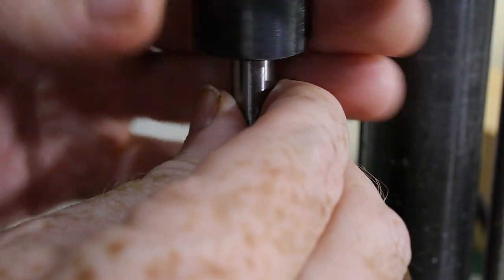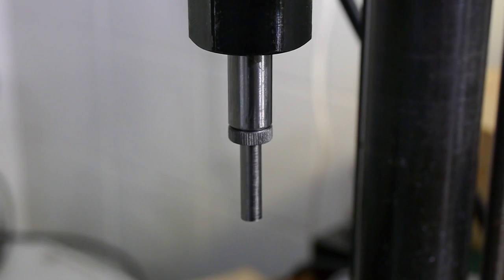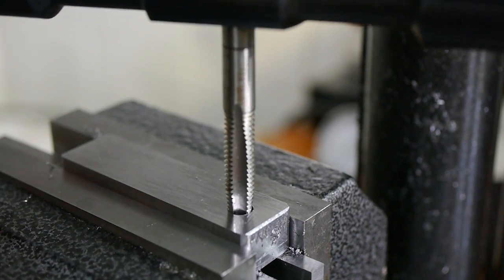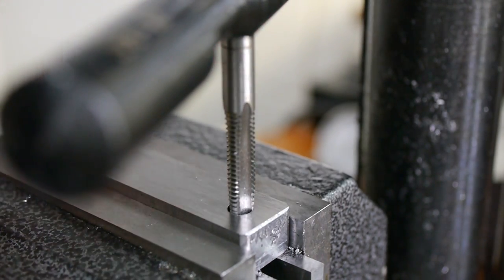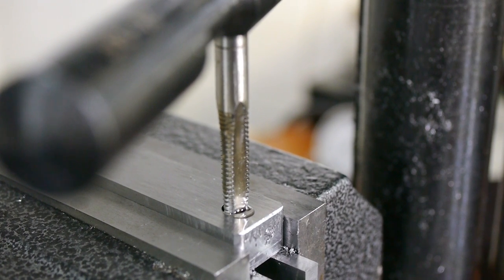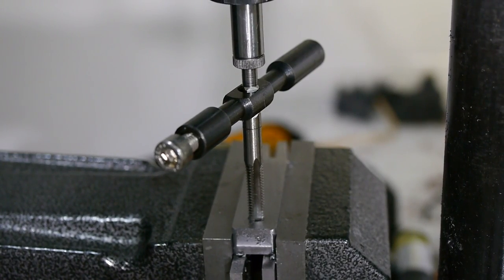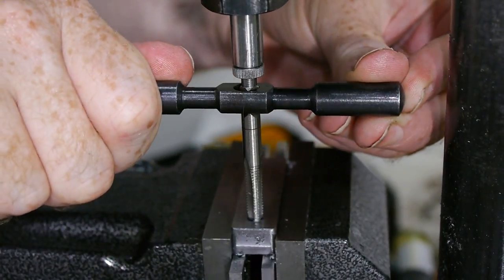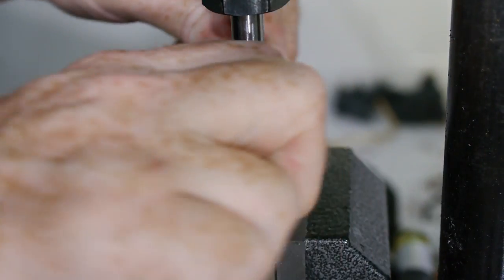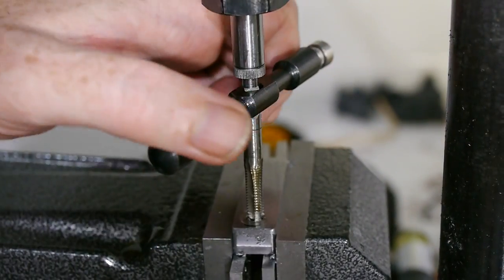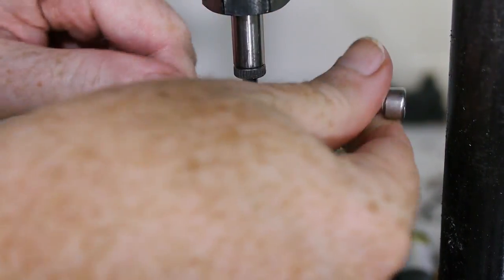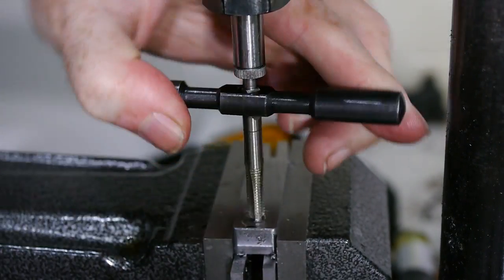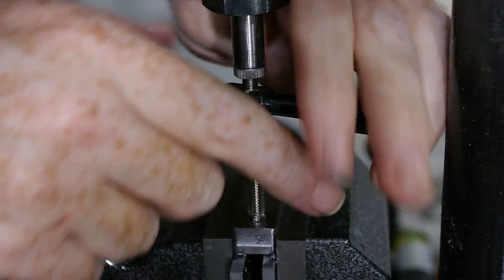Tapping was another job for my shop made tap follower. This steel was very hard to start tapping, and really tough going. I could have made it easier by slightly enlarging the tap hole, but I chose not to as I wanted to have as little slop in the thread as possible.